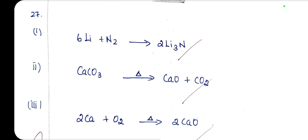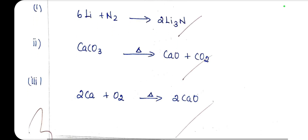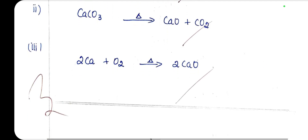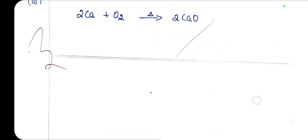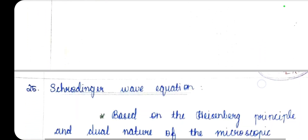Balanced equations: lithium reacts with nitrogen to give Li3N (lithium nitride). Calcium carbonate (limestone) on heating gives calcium oxide and carbon dioxide. Calcium heated with oxygen gives calcium oxide — 3 marks, full marks.